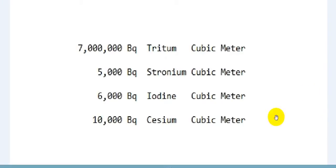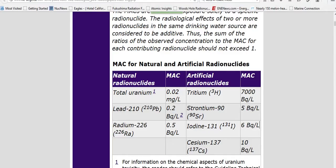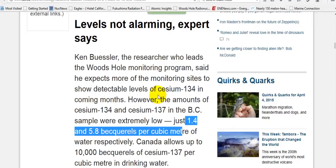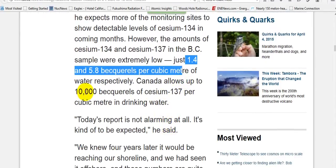Whoever did this needs to be dealt with publicly in our media. How can we trust them? CBC never bothered asking the question of why. They say Canada allows up to 10,000 becquerels of cesium-137 per cubic meter in drinking water. And they're right.